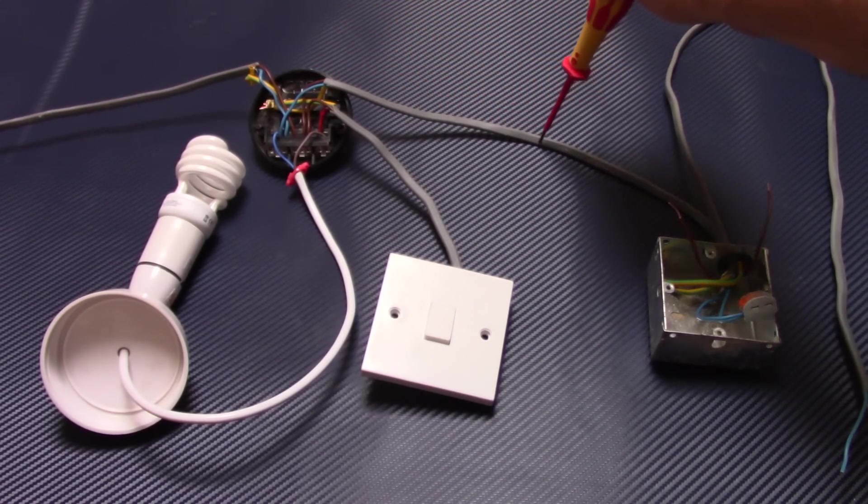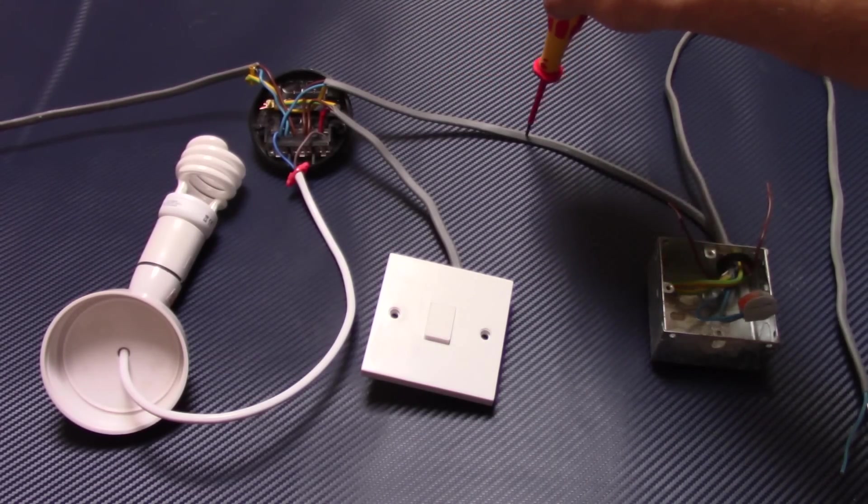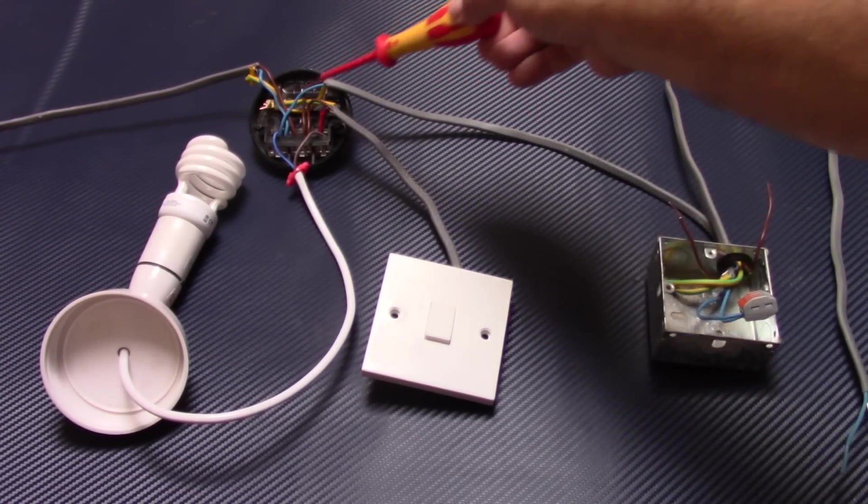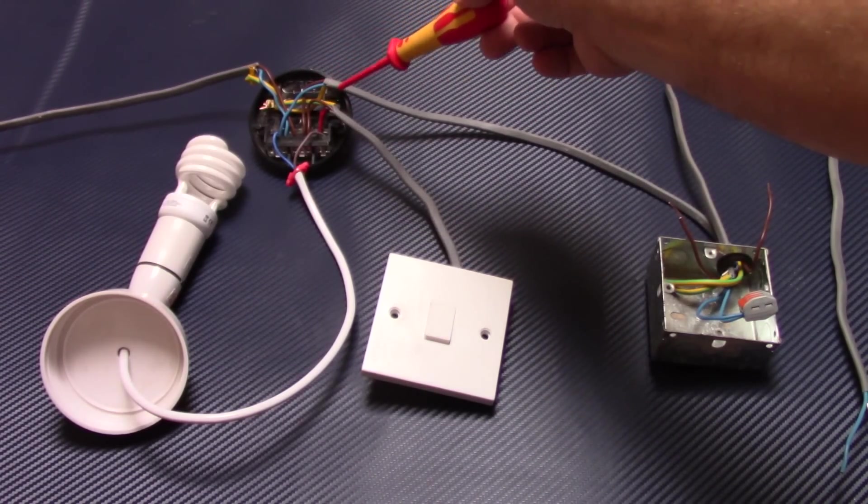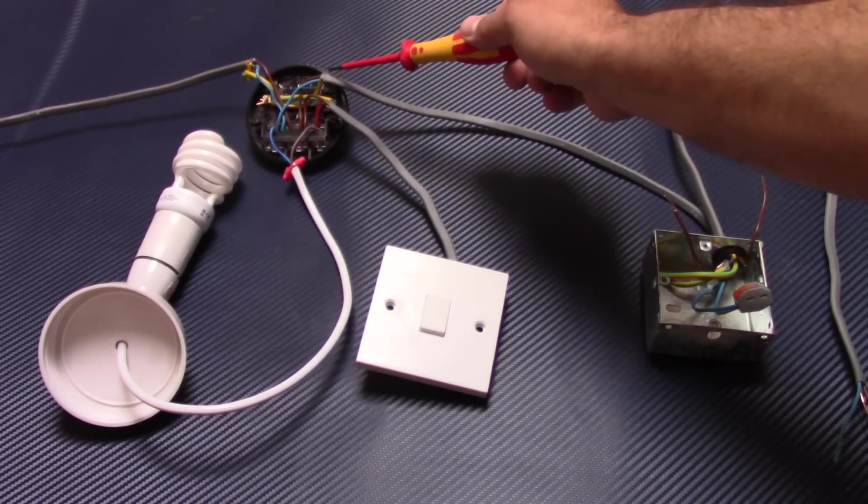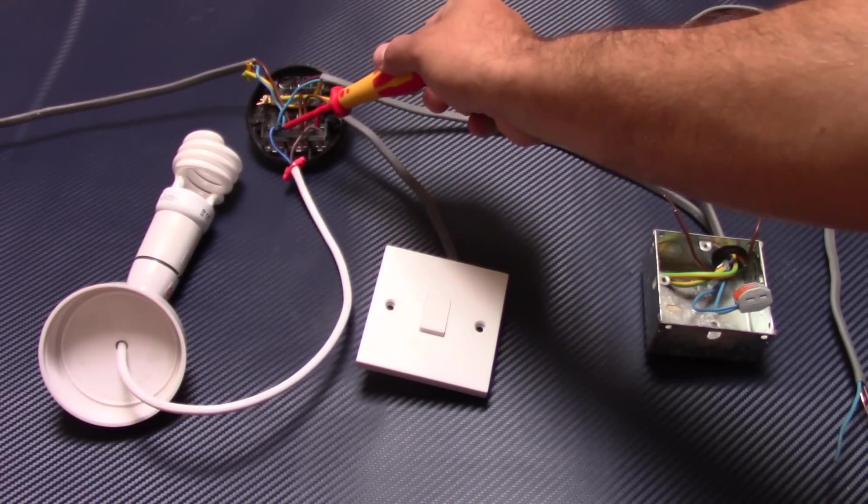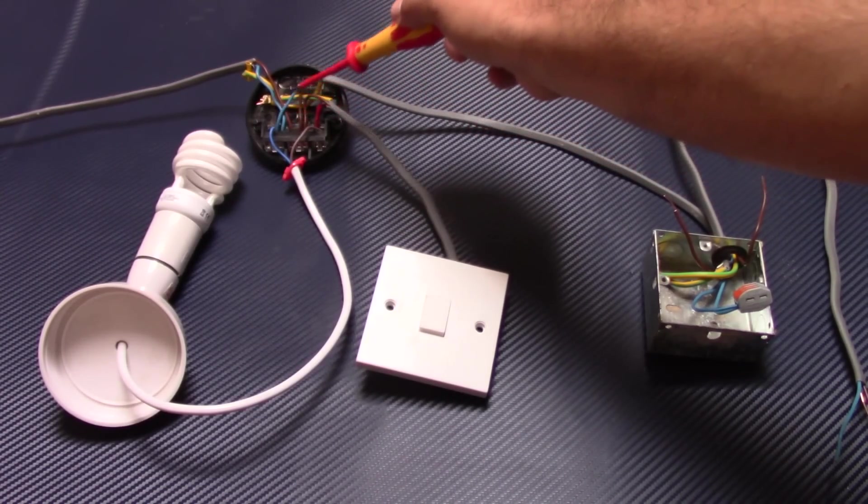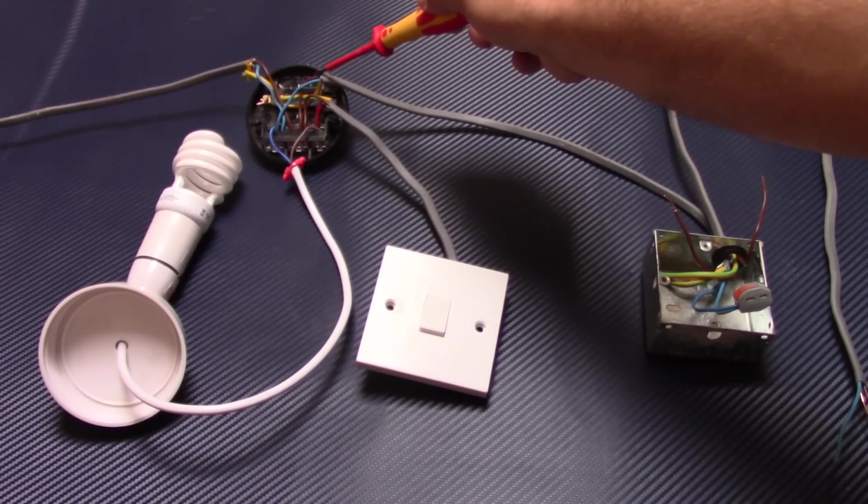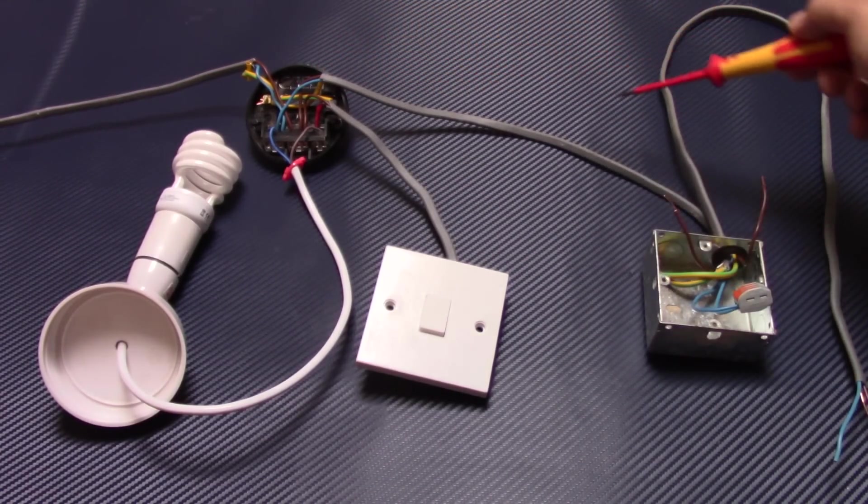In this room we don't want any ceiling rose, we just want spotlights. So this cannot be on the ceiling. As you see, this cable is just twin and earth, so the neutral is connected to the neutral terminal in the ceiling rose, the live is connected to loop, and then goes to another room.